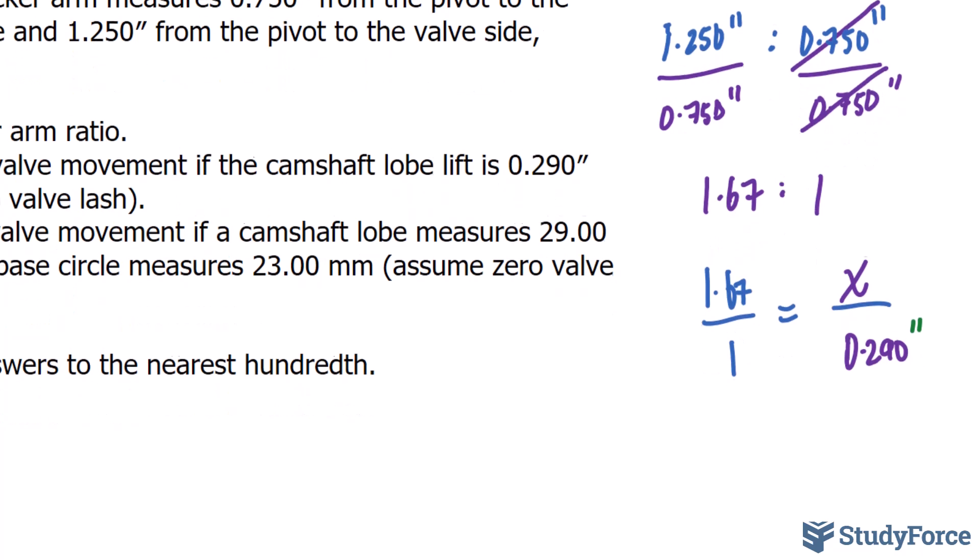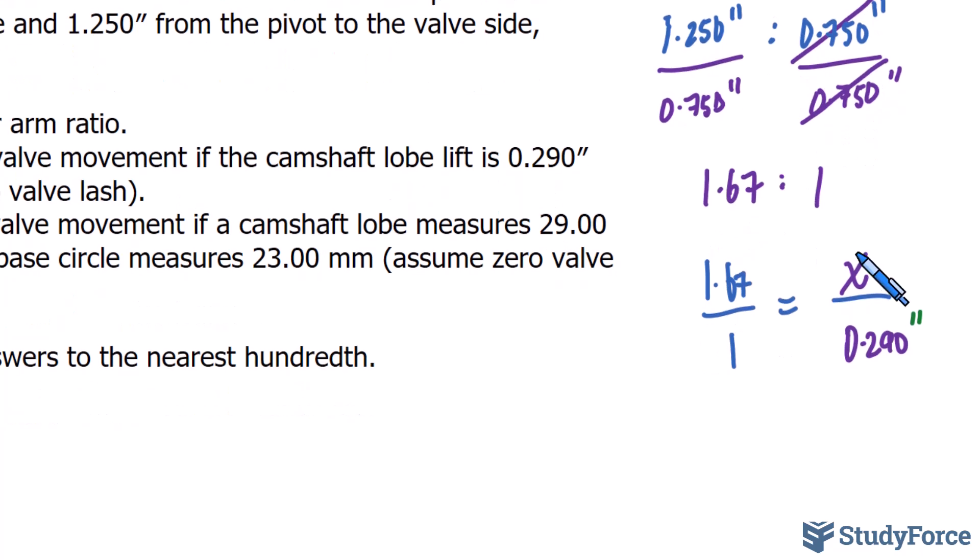And don't forget, that's in inches. So to find x, we cross multiply. That's how you solve proportions. And when you cross multiply, you'll end up with an x value that is equal to 0.29 inches times 1.67. So the 1.67 acts as a multiplier to whatever your camshaft lobe lift happens to be.